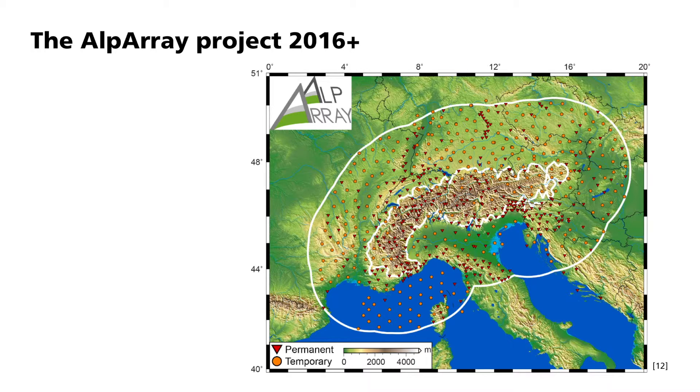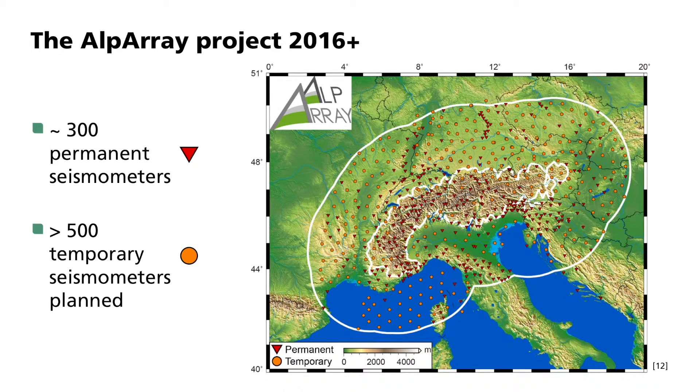As part of the AlpArray project, it is planned from 2016 to record local and global earthquakes over the entire Alpine region with approximately 300 permanent and more than 500 mobile seismometers. Using this data, a three-dimensional image of the subsurface of the entire Alps will be created for the first time, in order to better understand the interactions between the continental plates.